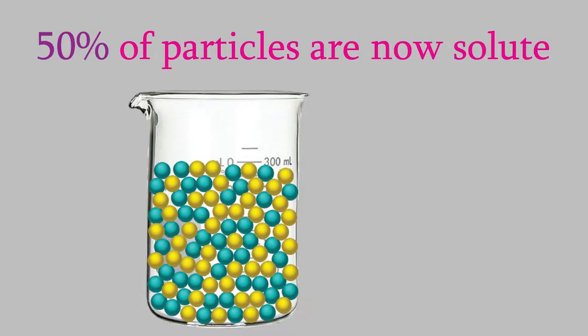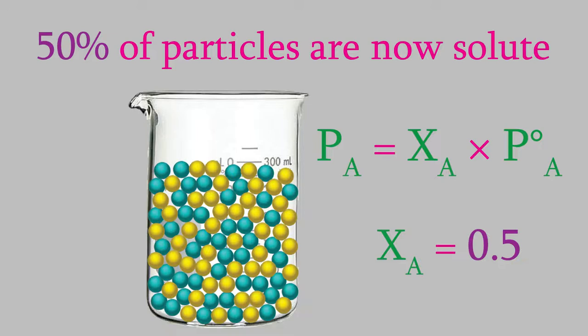Suppose half the molecules in our solution are solute molecules. In that case, half of the surface of the liquid would be blocked by the solute, so only half the usual number of solvent molecules would be able to escape the surface. That means the vapor pressure would only be half of what it would be if there were no solute. That's exactly what this equation is showing us. If half the molecules were solute and half were solvent, then XA, the mole fraction, would be 0.5, and that means the vapor pressure on the left would be just half of the vapor pressure of pure solvent.